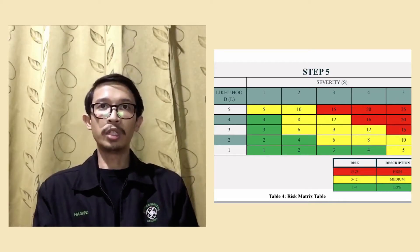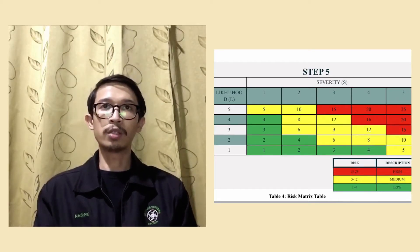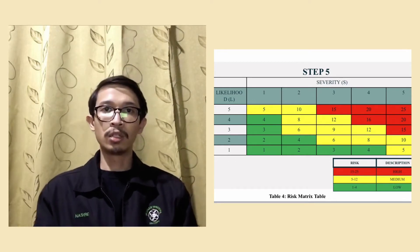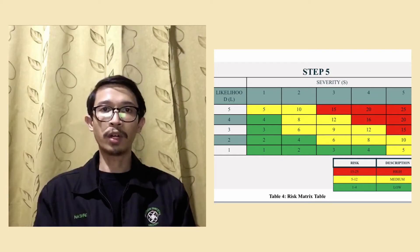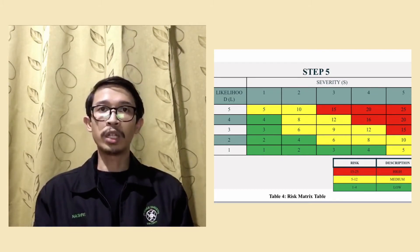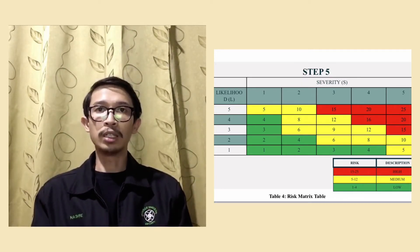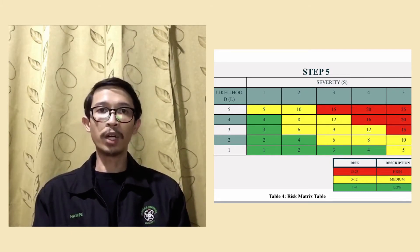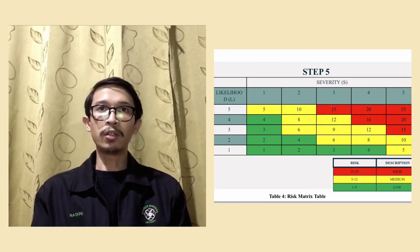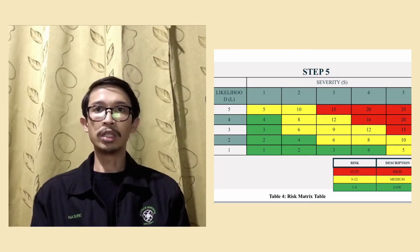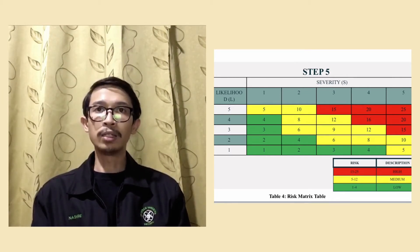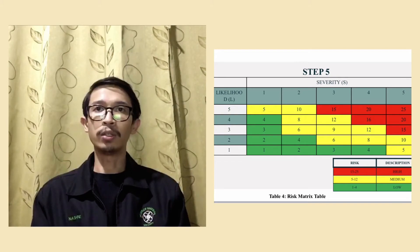In this part of the video presentation, I will explain step five: the risk value table. This table consists of five columns by five rows and has three different colors. For green, the risk level is minor risk with a risk value of one to four. For yellow, the risk level is medium risk with a risk value of five to twelve. For red, the risk level is major risk with a risk value of fifteen to twenty-five.